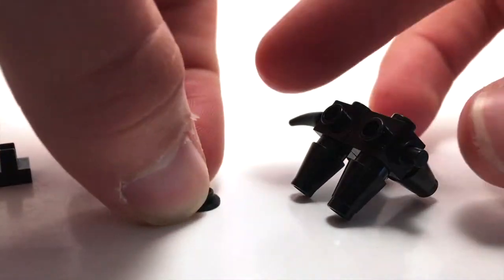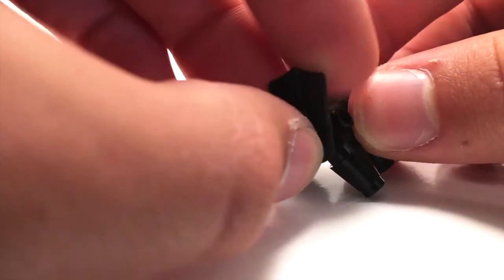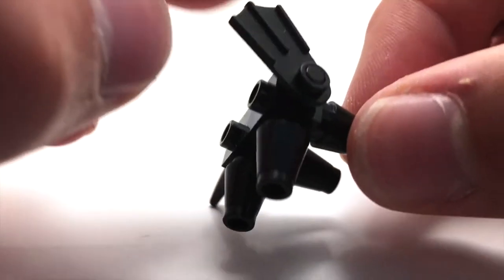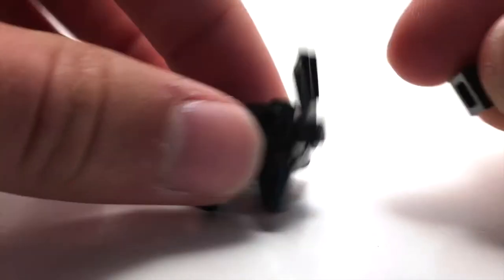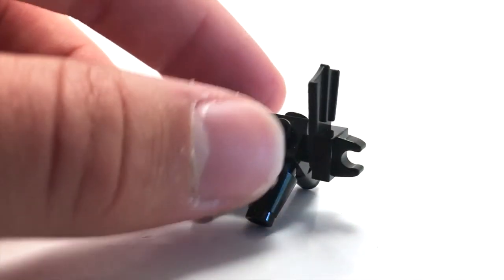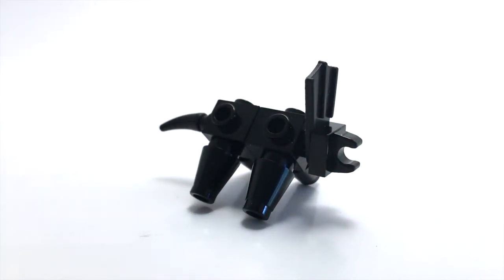And then the horns over the head are built using this flipper piece, actually, from minifigures that can stick onto their feet and be used as a flipper. But here, it creates that telltale horns on the head there.